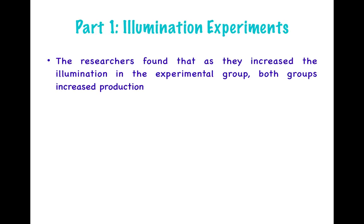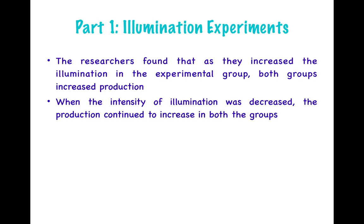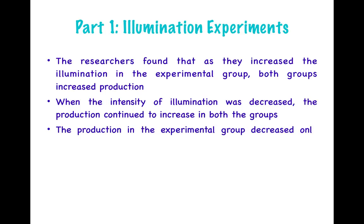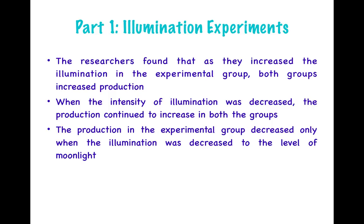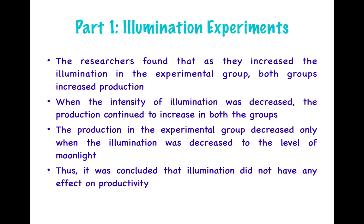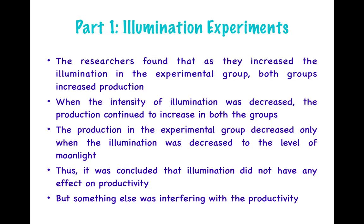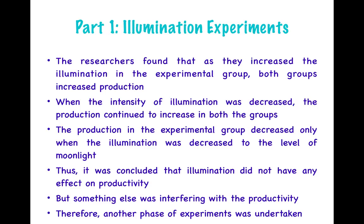When illumination was increased, both groups increased production. When illumination intensity was decreased, production continued to increase in both groups. Production in the experimental group decreased only when illumination was reduced to the level of moonlight, which is very low. It was thus concluded that illumination had no effect on productivity, and that something else was interfering with productivity, leading to the next phase of the experiment: the relay assembly test room experiment.